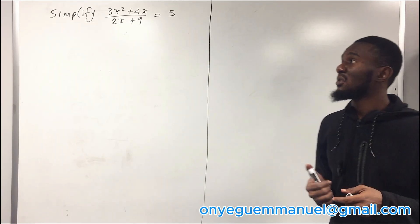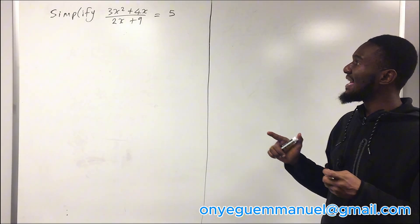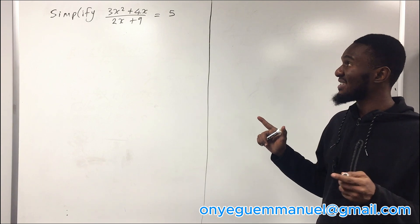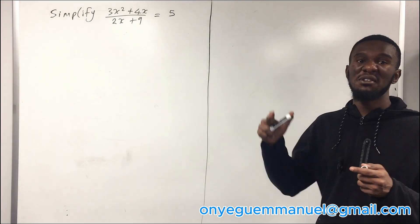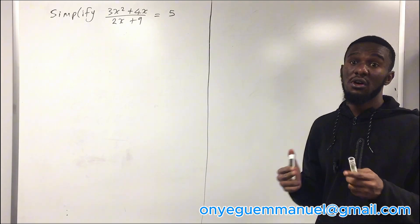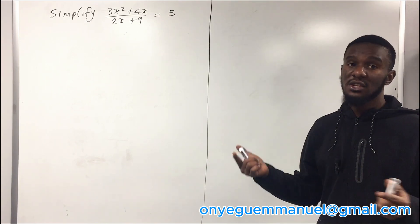Here we have another problem on the board. Simplify 3x squared plus 4x over 2x plus 9 equals 5. So we have to simplify this and find the value of x.